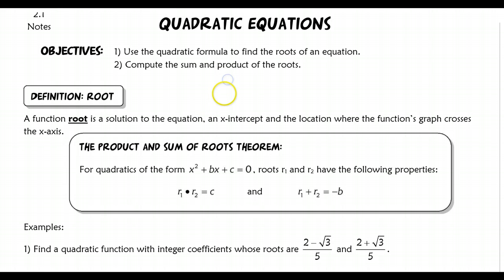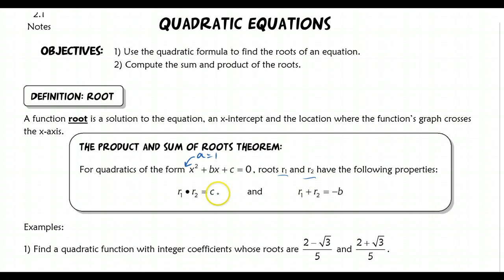Now the product and sum of roots theorem for quadratic: any quadratic of the form x² + bx + c — notice that a equals 1 here, a must equal 1. The roots, let's call them r1 and r2, have the following properties. When you multiply the two roots, it's going to equal the c term. And when you add the two roots, it's going to be the opposite of the b term.